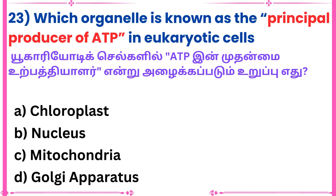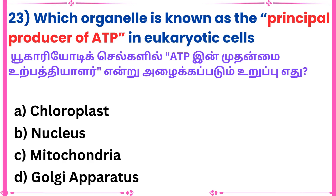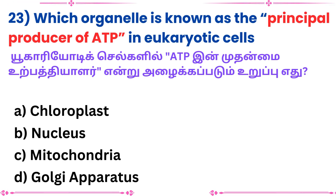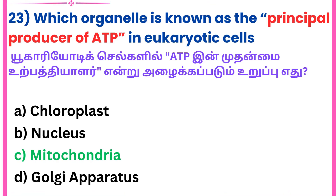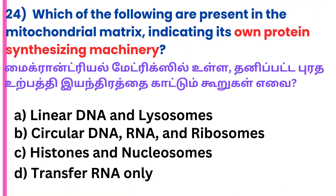Twenty-third question: Which organelle is known as the principal producer of ATP in eukaryotic cells?